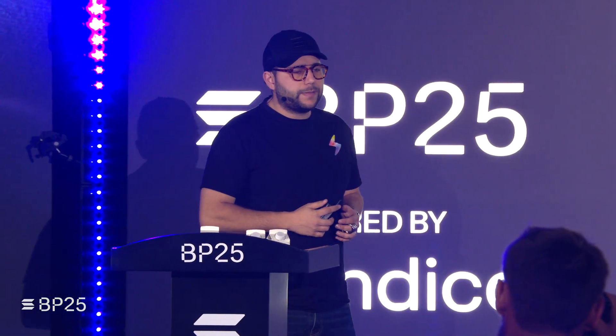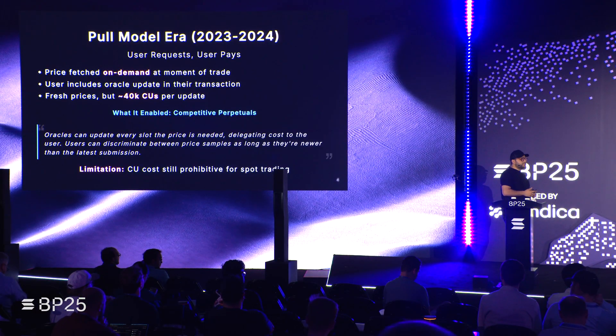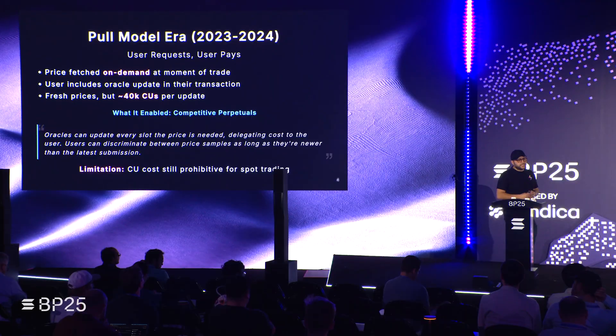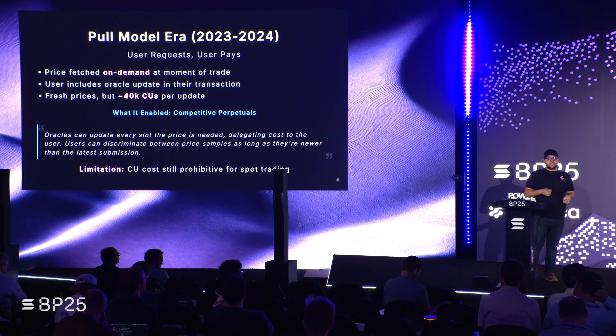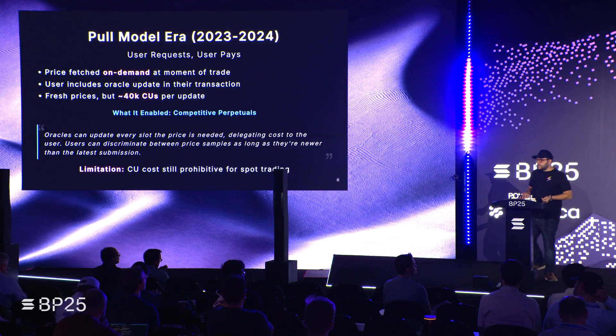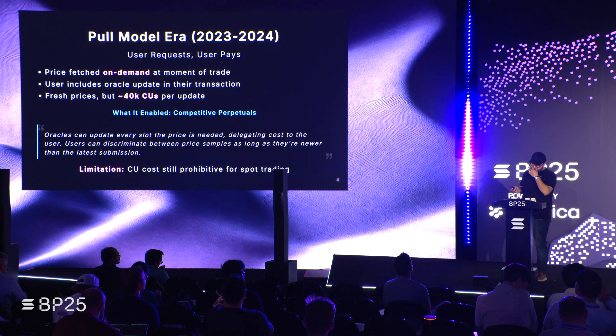With the pull model, we delegate the responsibility of pushing Oracle information to the user. This is much more practical — even on Solana, some Oracle platforms were spending $500,000 a month just to keep information up to date, which is unsustainable. If nobody's using the information between requests, it's wasted money and wasted block space. The pull model lets users request price updates only when they want to use them, with an off-chain consensus layer where all this information aggregates until the user pulls it on-chain.